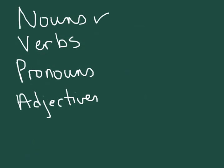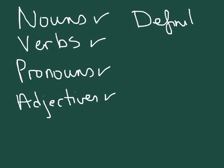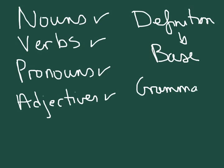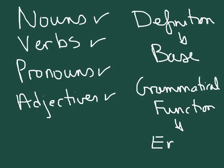In Latin, for nouns, verbs, pronouns, and adjectives, you're going to get the definition of the word from the base or the stem — the definition comes from the base. But the grammatical function, what the word is doing in a sentence, is going to come from the ending. We're constantly going to be talking about what does the word mean — that's the stem — versus what is it doing in the sentence — that's the ending.